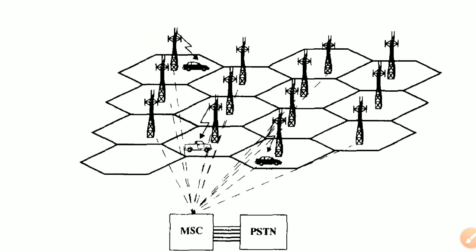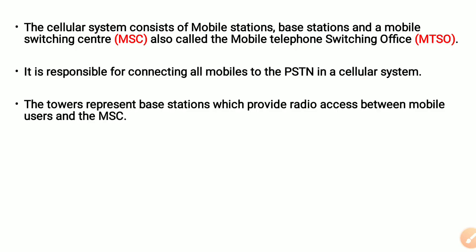This is a schematic representation of mobile communication or cellular radio communication. There is a MSC, which is known as mobile switching center, connected to the PSTN. The MSC acts as the gateway between different services and provides routing or call forwarding to different locations or base stations. This cellular system consists of mobile stations, base stations, and a mobile switching center, also known as mobile telephone switching office or MTSO. The MSC is responsible for connecting all mobiles to the PSTN in a cellular system.